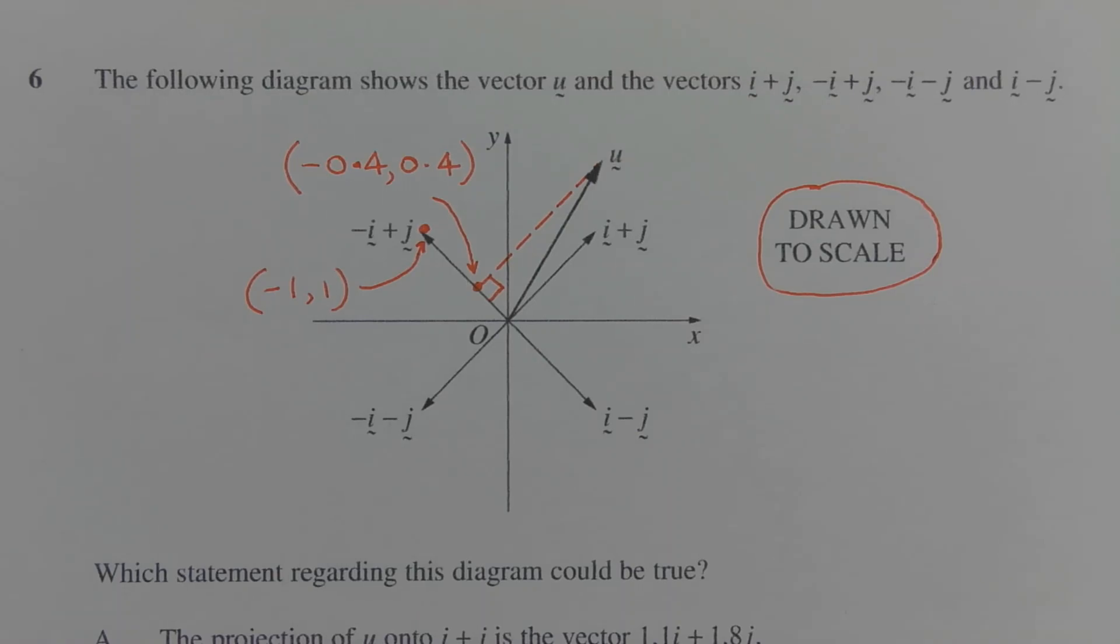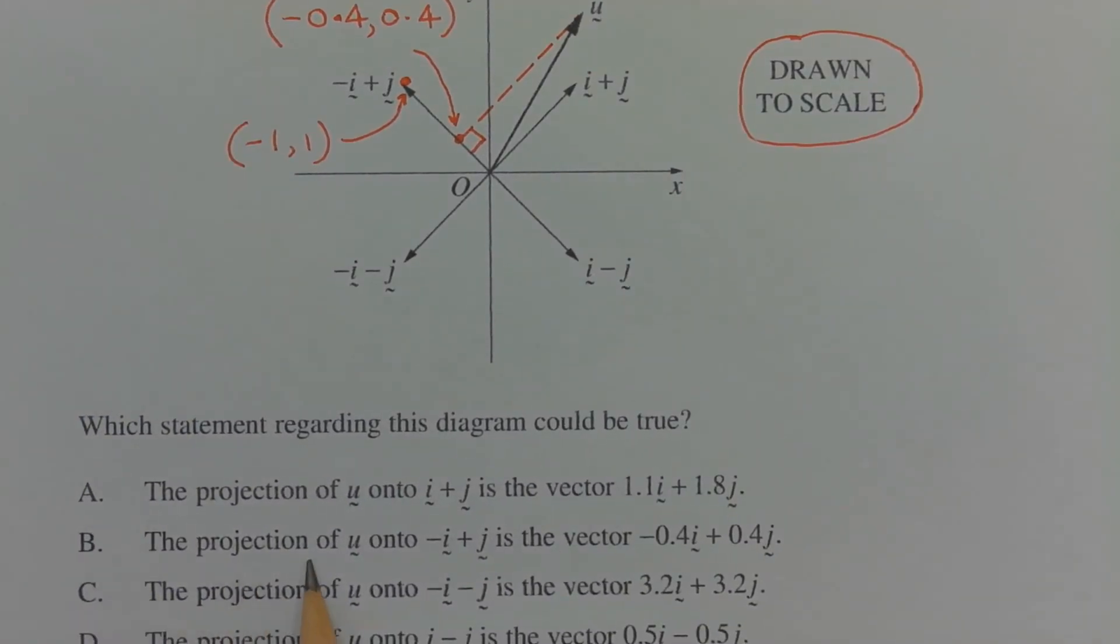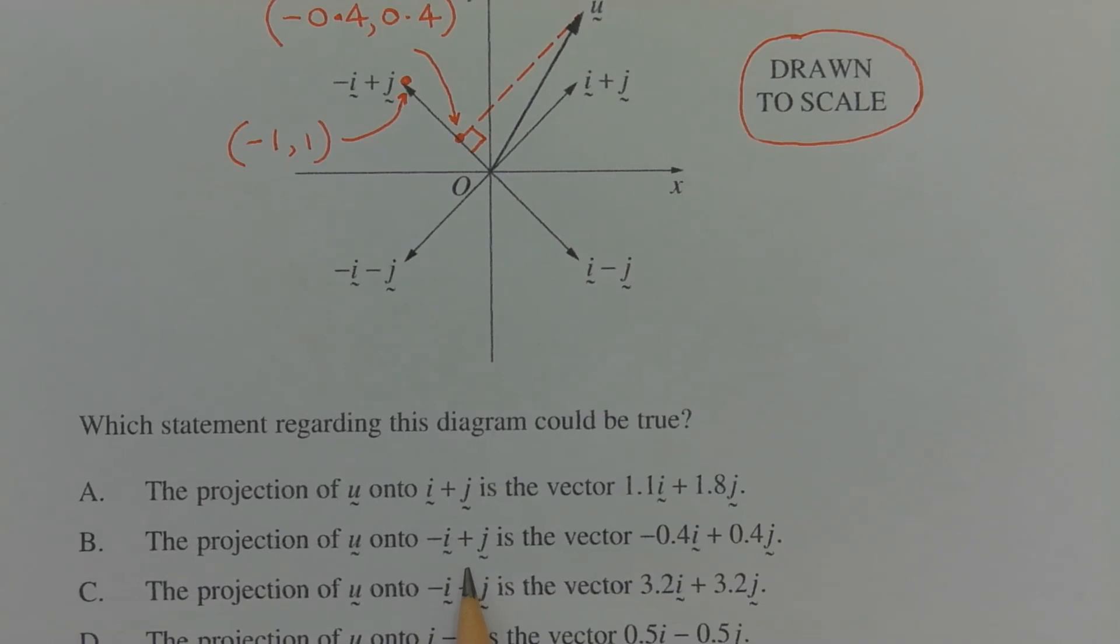Therefore, the answer is option B. The projection of u onto negative i plus j is the vector negative 0.4 i plus 0.4 j.